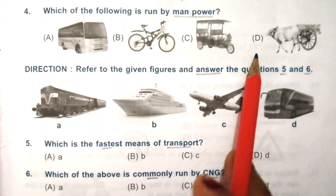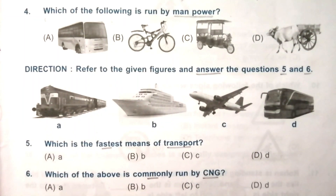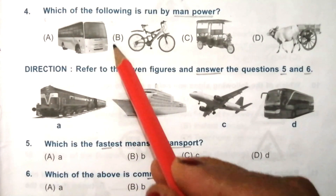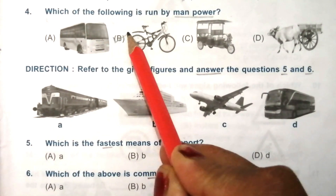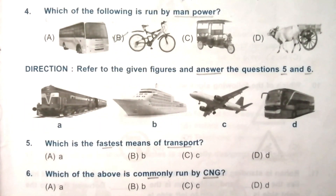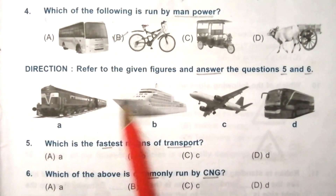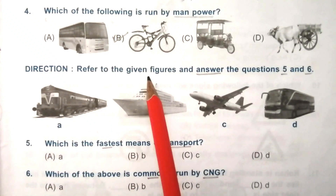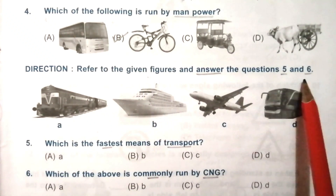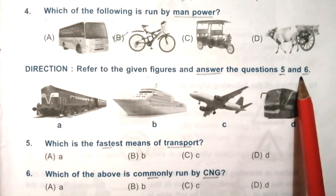Question 4: which of the following is run by manpower? Look at the given options carefully. The answer is B — bicycle.